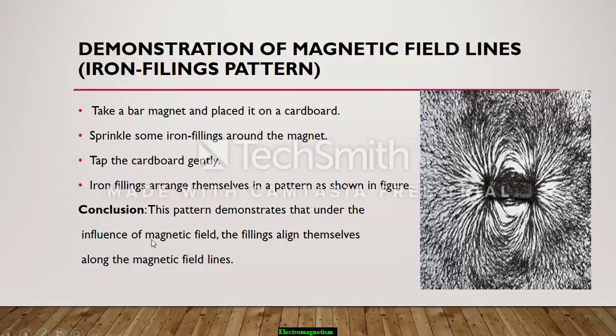So what can we conclude from this? This pattern demonstrates that under the influence of magnetic field, the filings align themselves along the magnetic field lines. We can see that it is like a curved path and is enclosed at the poles.